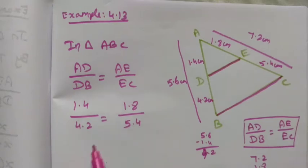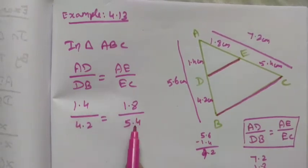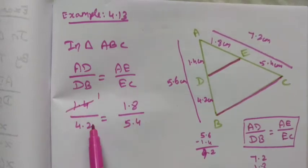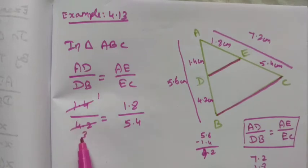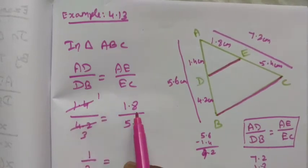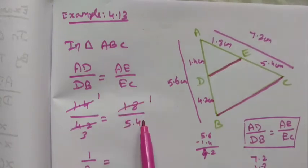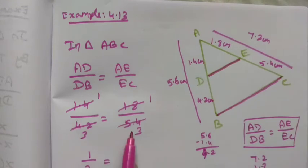Multiplying the terms by 10, we get 14 divided by 42, and 18 divided by 54. Simplifying: 14 divided by 42 gives 1 by 3, and 18 divided by 54 also gives 1 by 3. So LHS equals RHS.